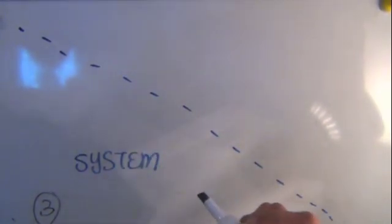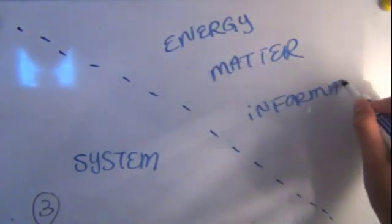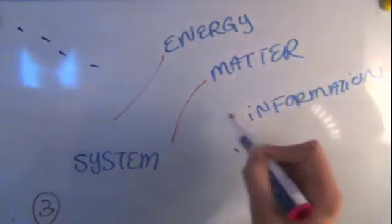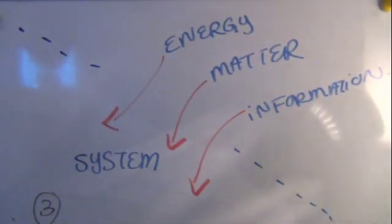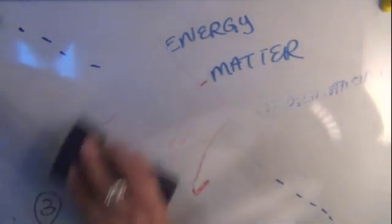Entropy refers to the system's tendency to deteriorate and run down. In order for an open system to sustain itself, it must import information, matter, and energy to offset entropic tendencies.